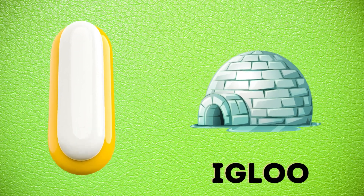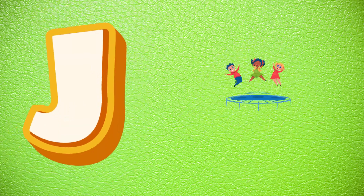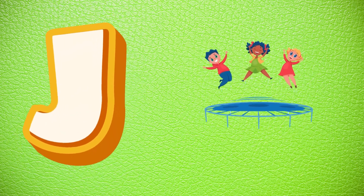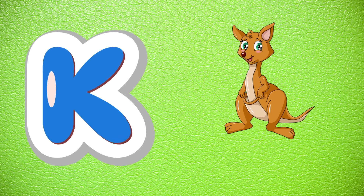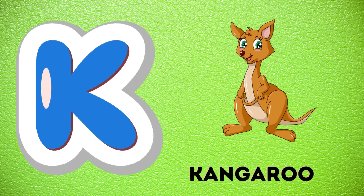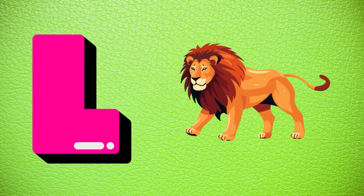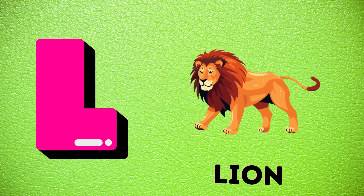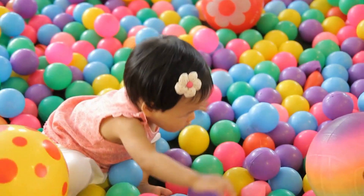I is for igloo, i-i-igloo. J is for jump, j-j-jump. K is for kangaroo, k-k-kangaroo. L is for lion, l-l-lion.